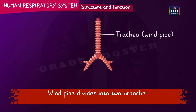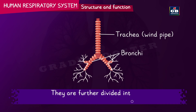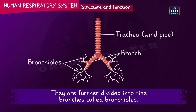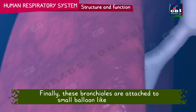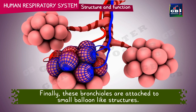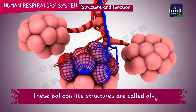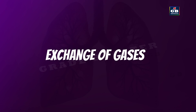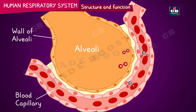The windpipe divides into two branches called bronchi. They are further divided into fine branches called bronchioles. Finally, these bronchioles are attached to small balloon-like structures called alveoli. The wall of the alveoli is only one cell thick and has a network of blood capillaries.